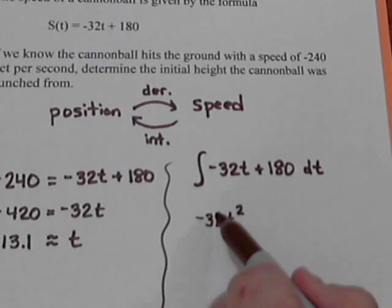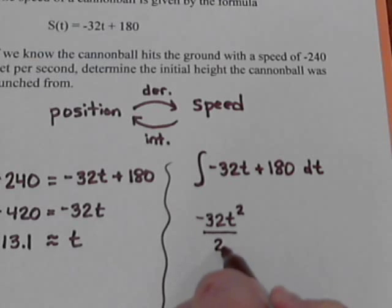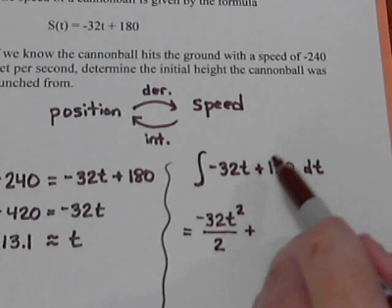And when we do the derivative, we would multiply by this number. So when we do the integral, we're going to divide by this number. And then our next term, we just have a constant term.